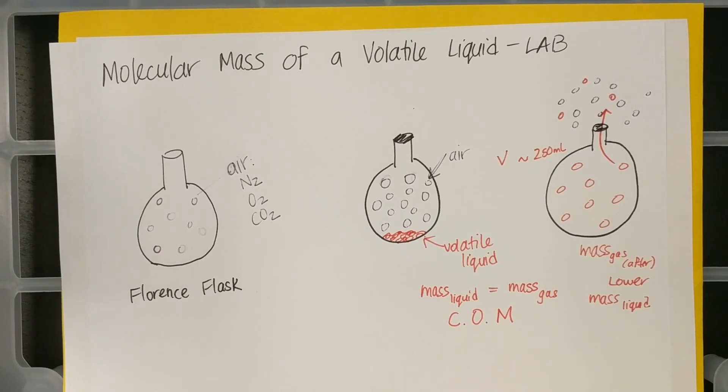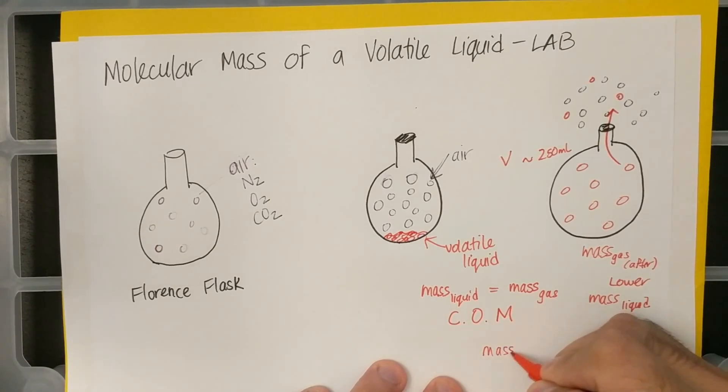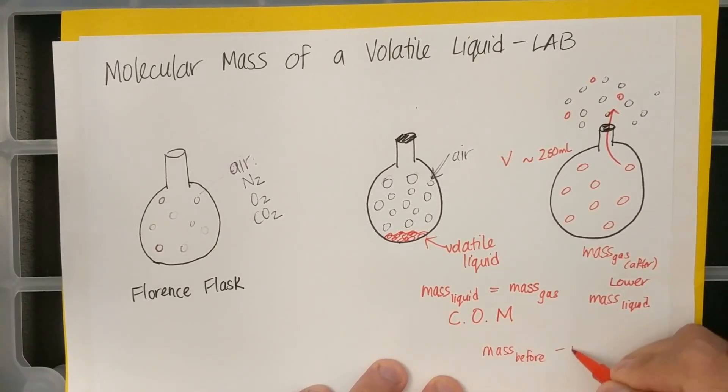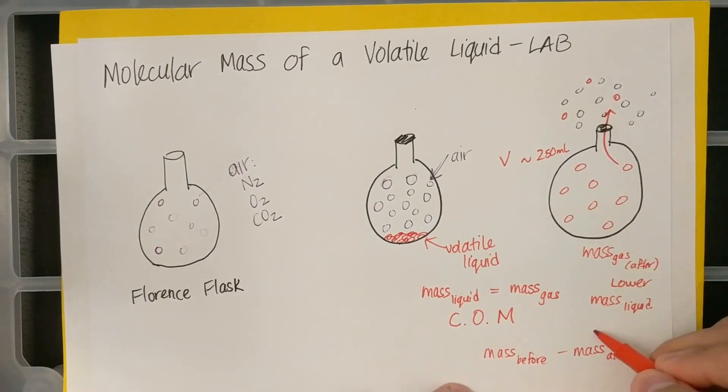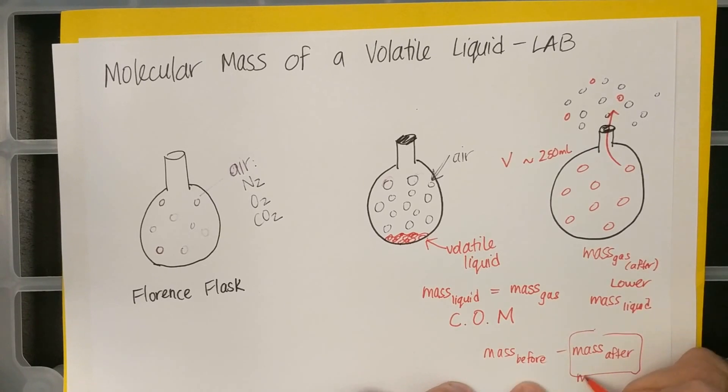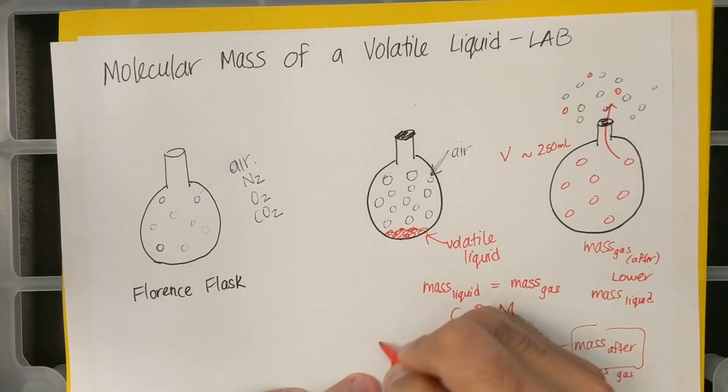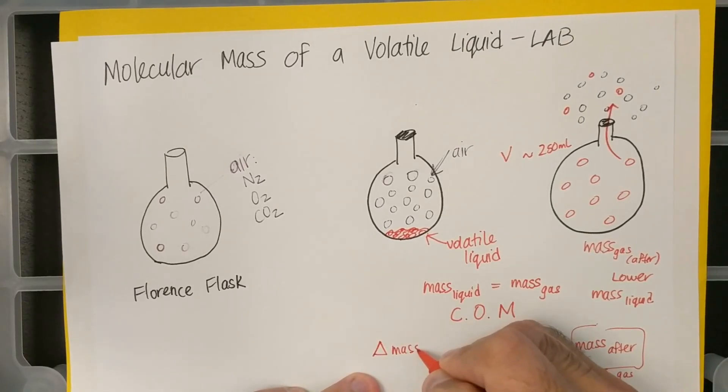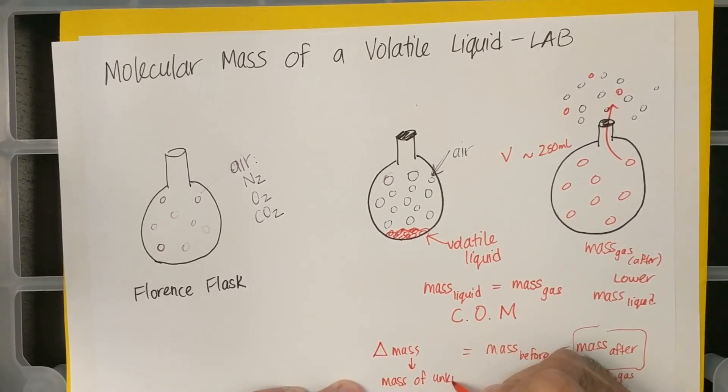So we have a volume that this gas fills up, but we also need to know what mass of gas that was. And so you need to have your mass before minus your mass after, and that could tell me how much of my liquid had escaped. But this mass after is going to be your mass of the gas.